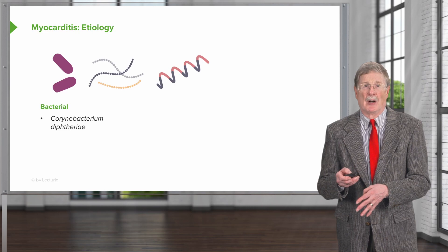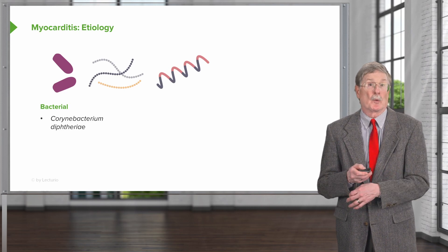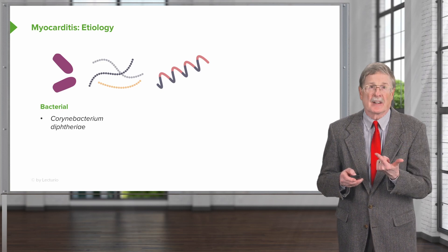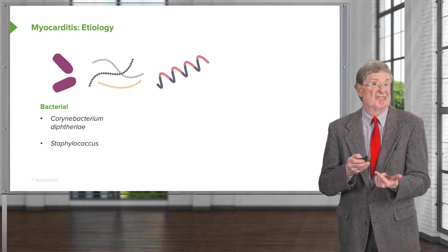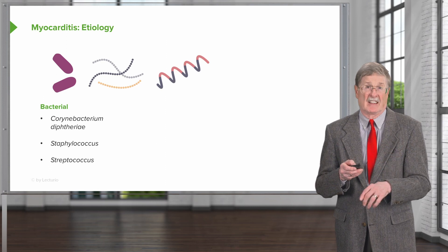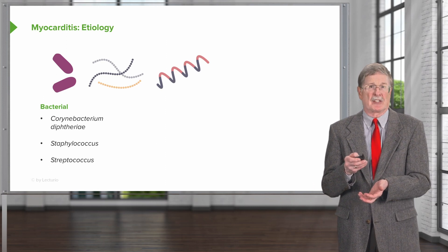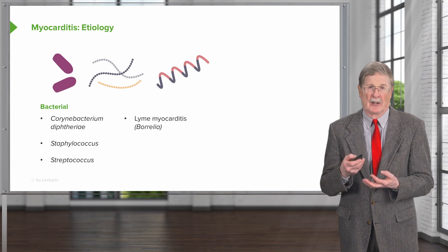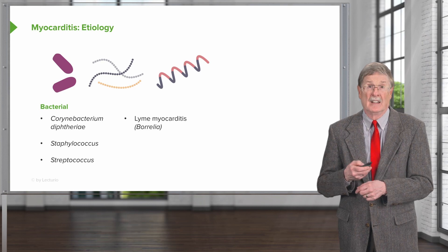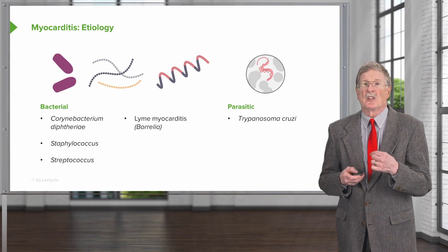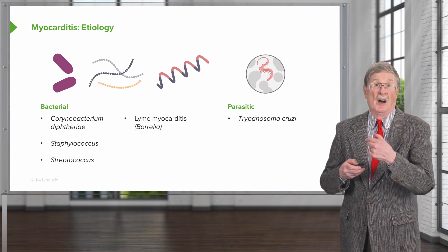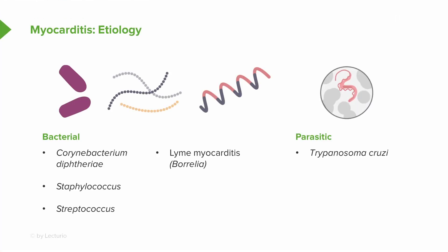We can also have bacterial forms of myocarditis. One is associated with Corynebacterium diphtheriae, causing diphtheritic myocarditis, which is really due to the elaboration of diphtheria toxin. You can have Staphylococcus or Streptococcus myocarditis, causing lesions you might expect in any other infected tissue. We can have Lyme myocarditis, due to Borrelia, the spirochete shown on the right. We can also have parasitic infections — in developing parts of the world, Trypanosoma cruzi is a major form, so-called Chagas disease. You can also have Toxoplasma gondii, a very common form of myocarditis in the immunocompromised host.